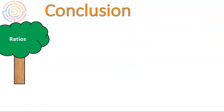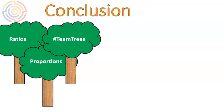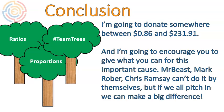So a quick conclusion: we talked about ratios, we talked about proportions, and we talked about Team Trees. As a conclusion, I am going to donate somewhere between eighty-six cents and two hundred thirty-one dollars and ninety-one cents. You can check it out on Team Trees and see how much I donated. I'm also going to encourage all of you to give what you can for this important cause. Mr. Beast, Mark Rober, Chris Ramsey — it's great to see them all part of this. We can't do it by ourselves, but if we all pitch in we can definitely make a big difference. I'll have the links in the video description. I hope you can donate a little bit, and I hope this video was helpful. Have a wonderful day.